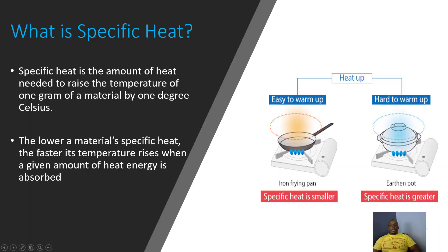So what exactly is specific heat? Specific heat is the amount of heat needed to raise the temperature of one gram of a material by one degree Celsius. The lower a material's specific heat, the faster its temperature rises when a given amount of heat energy is added or absorbed.